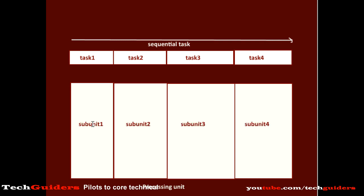such that each sub-unit can independently perform each sub-task, then we will be able to make use of one concept called pipelining to improve the performance of this process. We know that the task of the processor is instruction execution and instruction execution is a sequential process that has to be repeated.